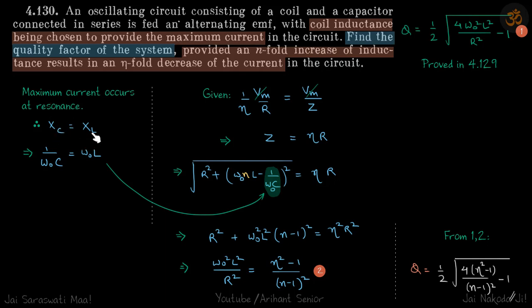xc is equal to xl. For the circuit, let's say the natural frequency is omega_0, so 1 by omega_0 c is equal to omega_0 l. Now it's given to us when the inductance is changed,